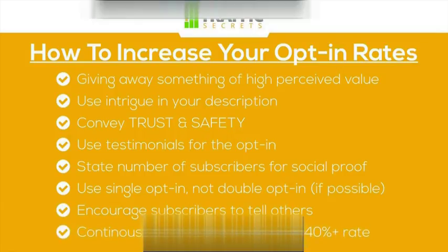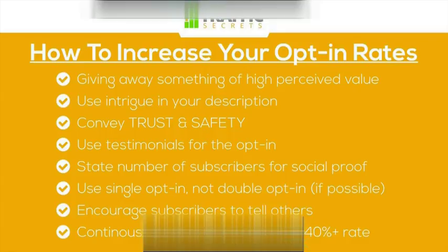Last but not least, continue split testing your opt-in forms to get higher rates. Target a 35 to 40 percent opt-in rate — about a third to 40 percent of people that visit the page with the opt-in form. Some markets with very targeted traffic, like search ads, can get 50 to 60 percent opt-in rates, but that's very rare. Typically opt-in rates level out somewhere in the 20 to 25 percent range for most markets. But if you do a good enough job with your marketing, you can get it up to a third or even 40 percent.